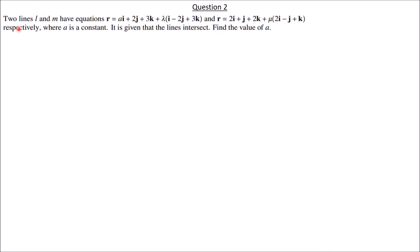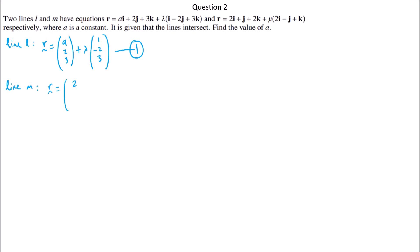Question 2. Two lines L and M have equations given. Line L: r = (A, 2, 3) + λ(1, −2, 3). Line M: r = (2, 1, 2) + μ(2, −1, 1). It is given that the lines intersect — find the value of A.